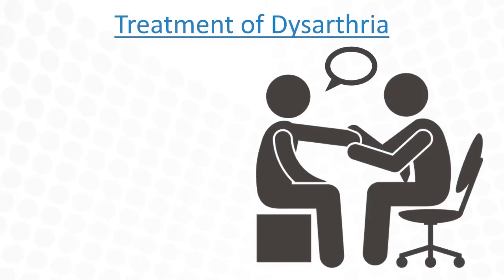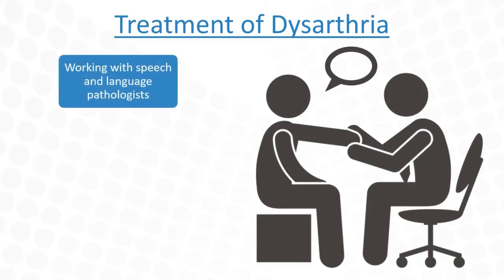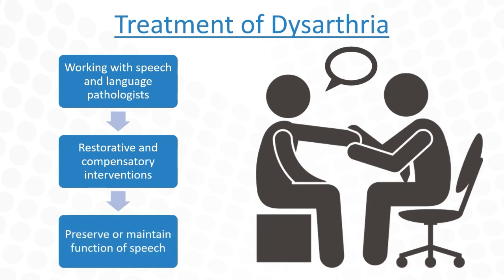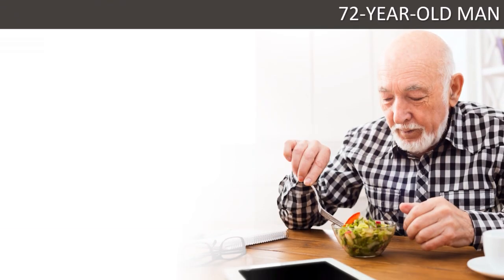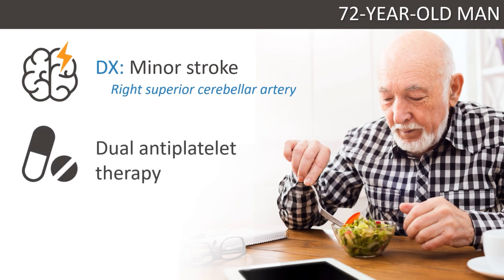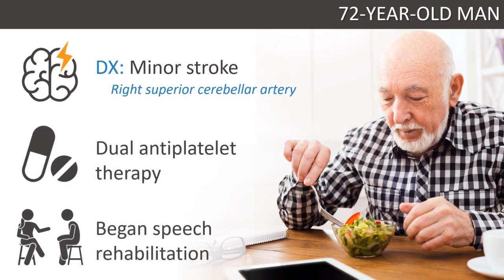Treatment of dysarthria involves working with speech and language pathologists on restorative and compensatory interventions that help preserve or maintain function of speech. Our patient showed evidence of a minor stroke in the territory of the right superior cerebellar artery. He received dual antiplatelet treatment and was started on a speech rehabilitation program with a speech and language pathologist.